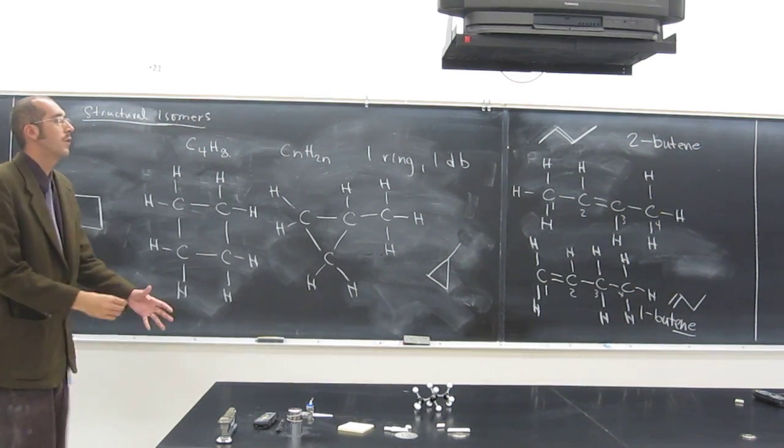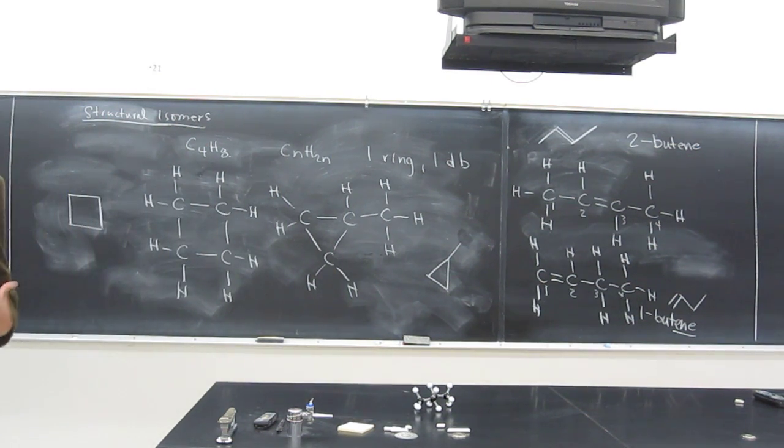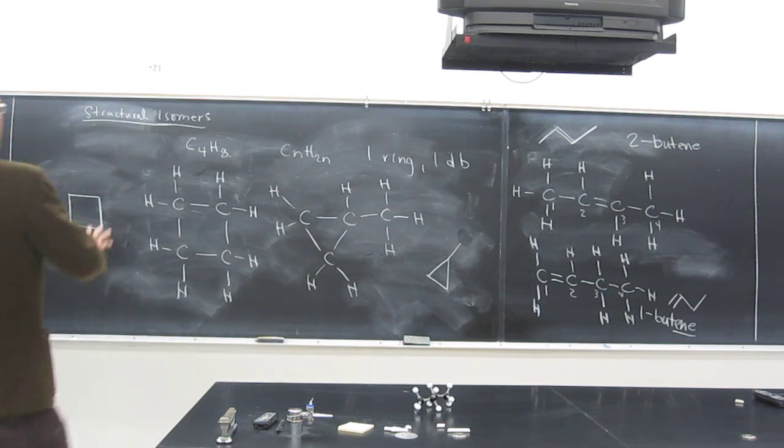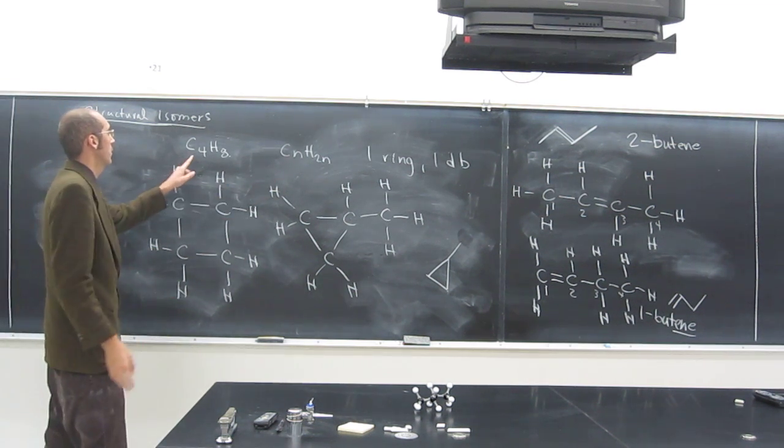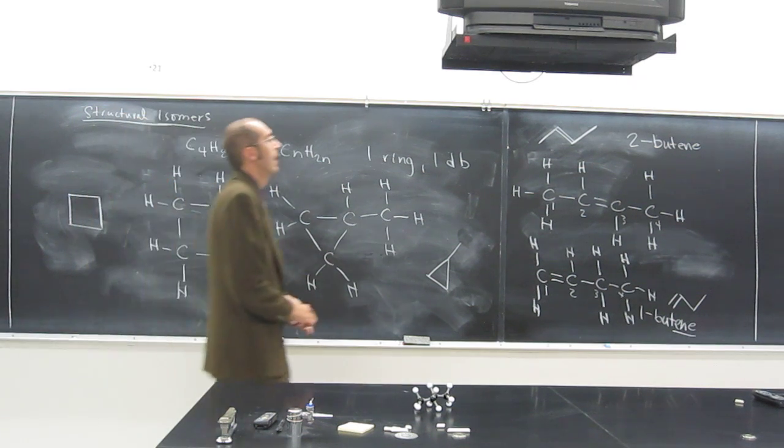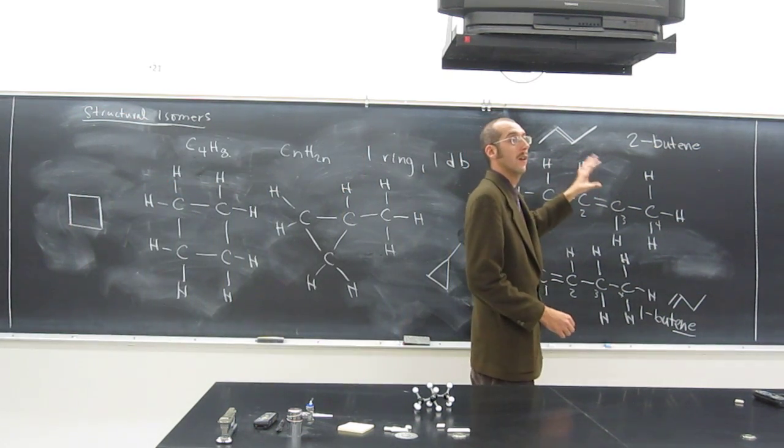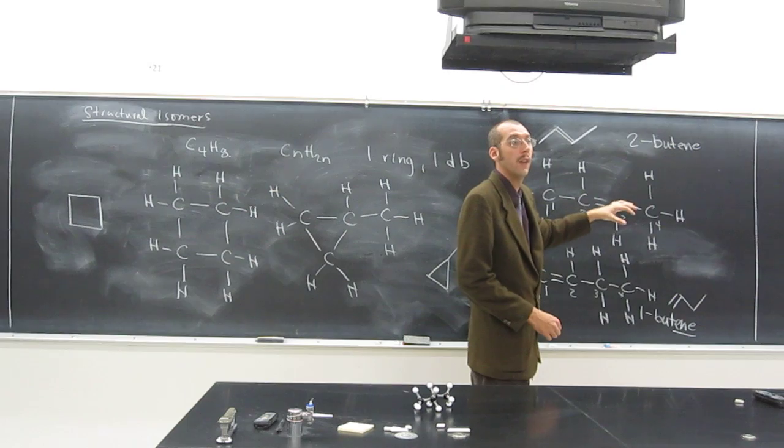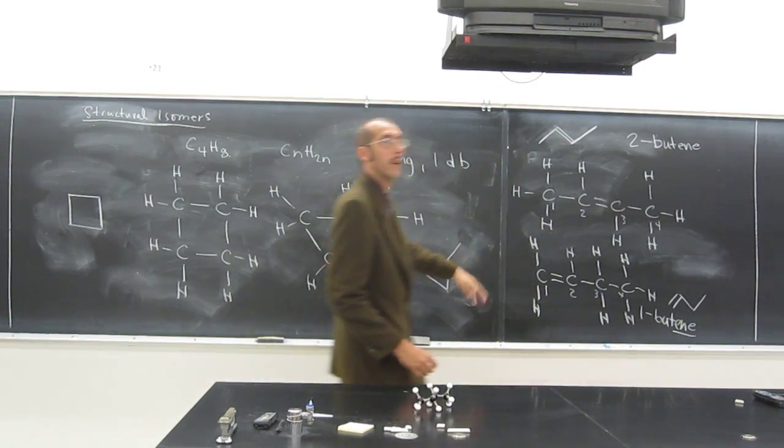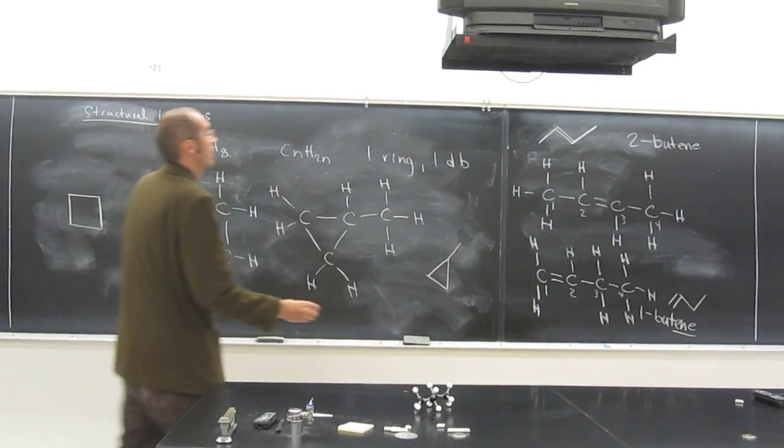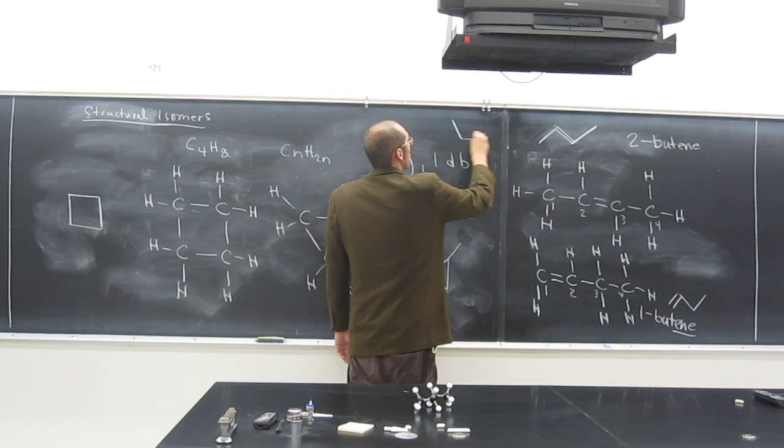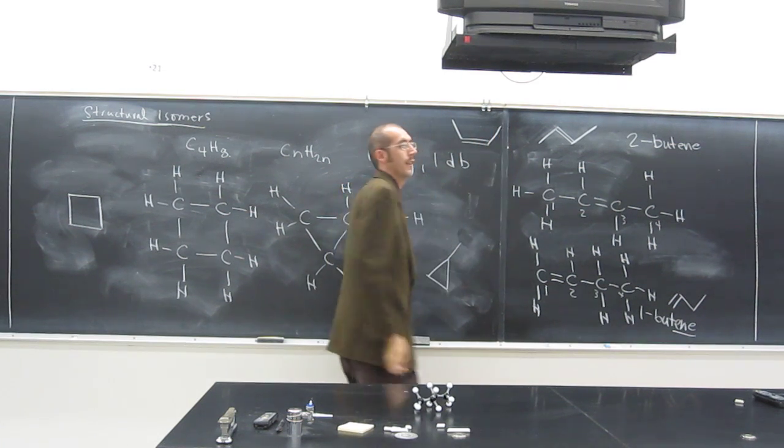So, 2-butene actually has two structural isomers. I'm going to erase all the other structural isomers of C4H8. On the last video, I probably should have drawn this other structural isomer too before I turned it off. In fact, there's another structural isomer, 2-butene, that's like that.